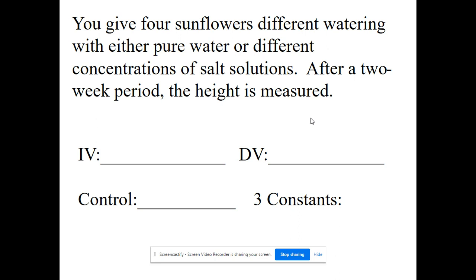The control is what we normally do or the no-treatment group. We don't normally put saltwater on plants, so the no-treatment is the plant that gets only pure water — that's our control. Constants we'd want to keep the same include the type of sunflower plant, the type of soil, the overall amount of water added, and the amount of sunlight.